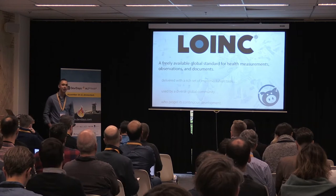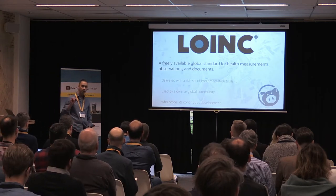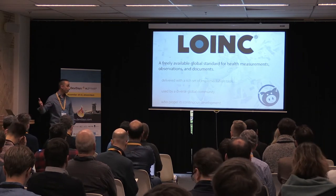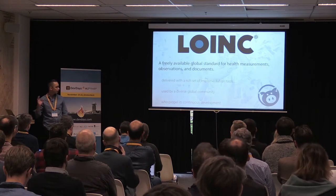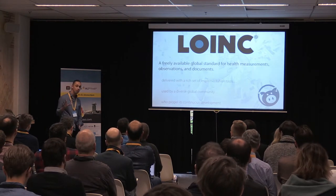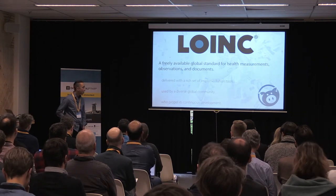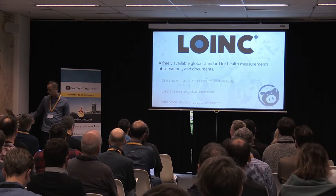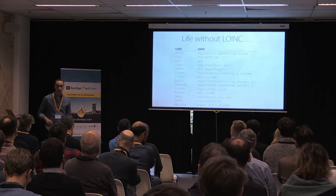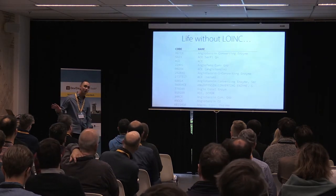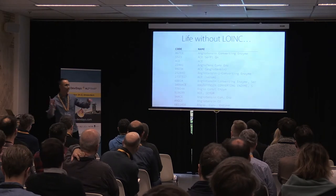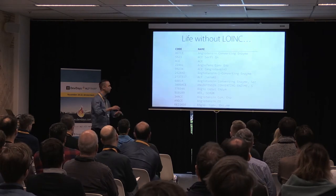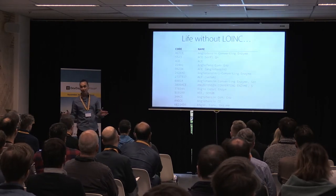LOINC is a freely available global standard for health measurements, observations, and documents. Like FHIR, it is licensed in an open way, meaning you can use it in commercial and non-commercial systems, and it's propelled in its development by a global community of users. That includes both the content added into LOINC as well as the direction and governance. You don't have to use LOINC, but if you start using FHIR and build interfaces to multiple different systems, you will run into the problem that all the different systems — whether lab systems, vital signs measurements, or whatever — have different ways of identifying the same content.